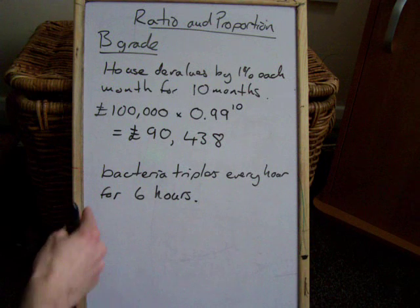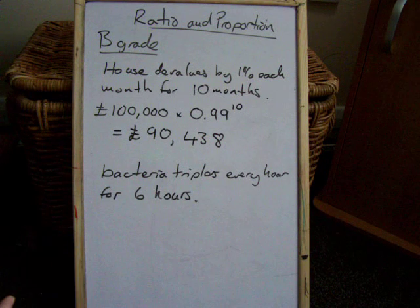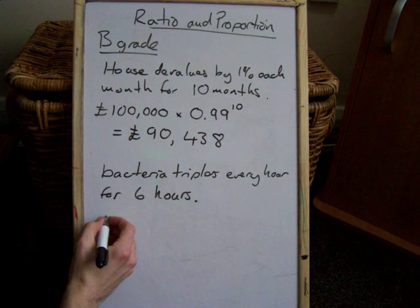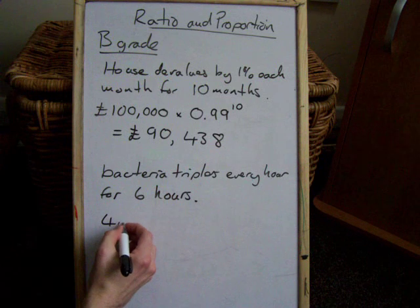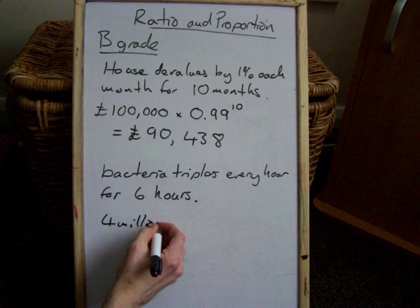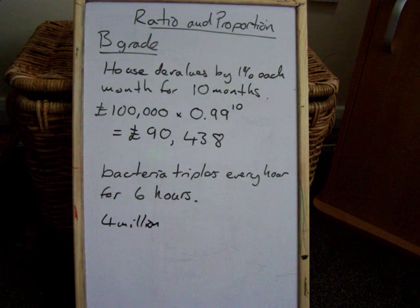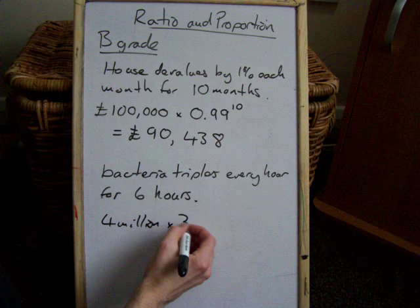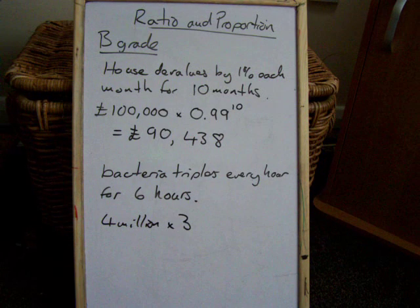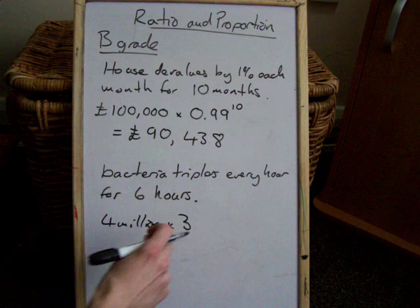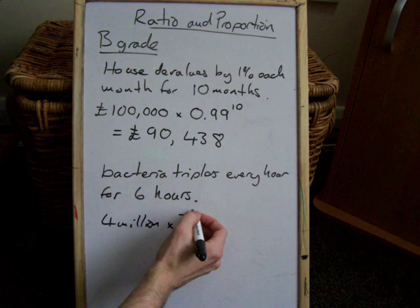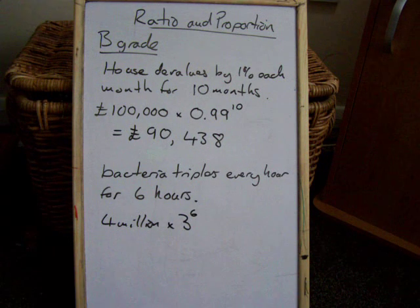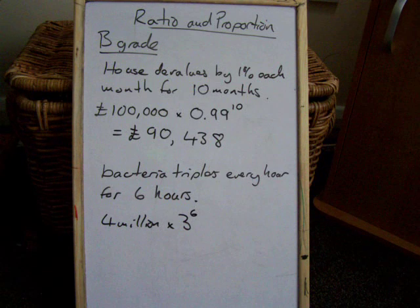Second type of multipliers question: bacteria triples every hour for 6 hours. Say I've got 4 million bacteria. The multiplier for tripling is to multiply by 3. It multiplies every hour for 6 hours, so you're going to multiply by 3 six times — that's 3 to the power of 6. So we've got 4 times 3 to the power of 6, which is going to be pretty huge.